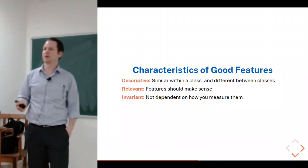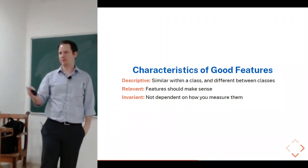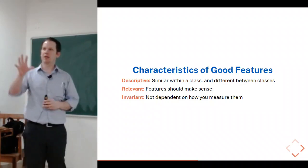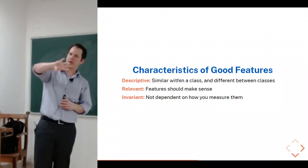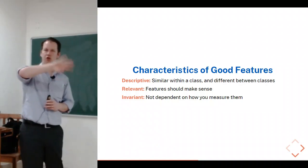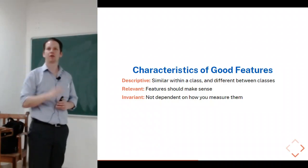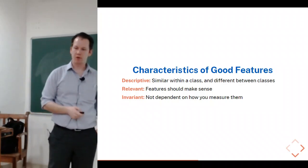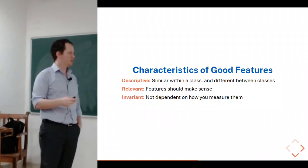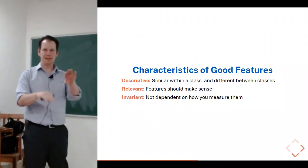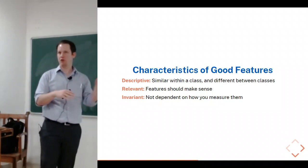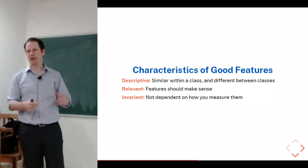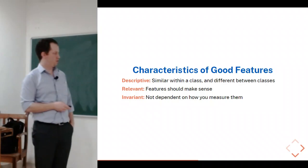Features should also be invariant. In the case of images, if you rotate an image, you should get the same set of features — it shouldn't depend on whether the slide is flipped. In microscopy, you should also be invariant to image intensity, because that can change regardless of the image you're looking at.